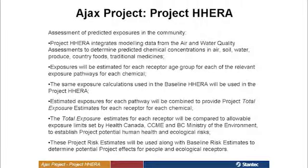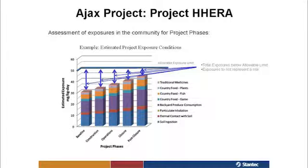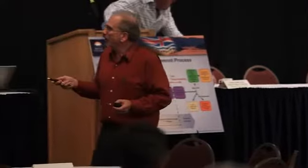For the project, the HHERA is going to integrate all of the effects assessments — air quality, water quality, terrestrial effects — to generate our estimates of chemical concentrations that we use to estimate the exposures. The calculations are the same as baseline. We sum those to give us total exposures and then compare: there's our baseline, then construction, operations, closure, and post-closure. What we're trying to do is figure out how things are changing as time goes by. Really what we're going to be looking at are the first and the last, trying to decide whether all of these exposures are above or below the allowable exposure limit.